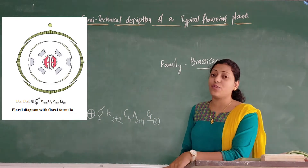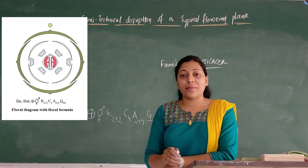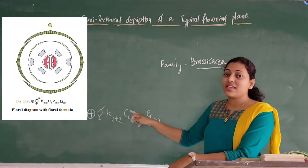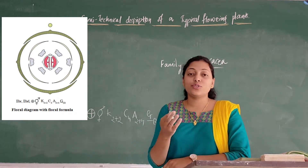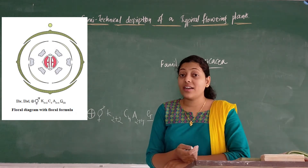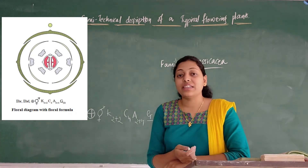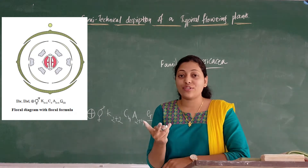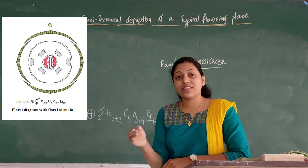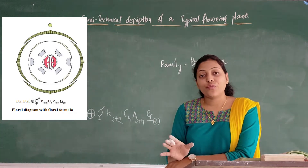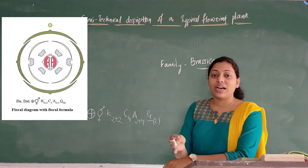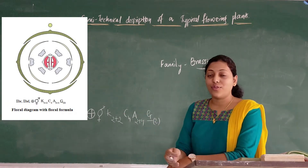C is 4 — corolla is 4 in number, that is petals are 4 in number. Then A is 2 plus 4 — androecium is 2 plus 4. That is, we get 6 stamens, but here we see diadelphous condition — two bundles of androecium are there. Two stamens form one bundle and four stamens form another bundle, so we basically see two bundles here: 2 is attached to one whorl and 4 is attached to the other.